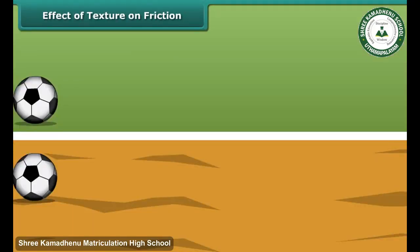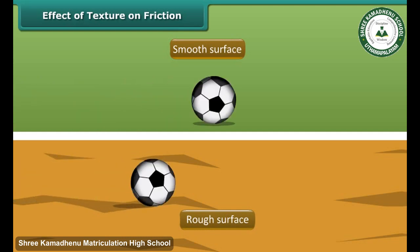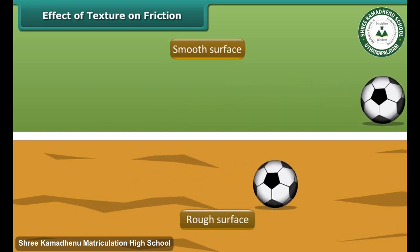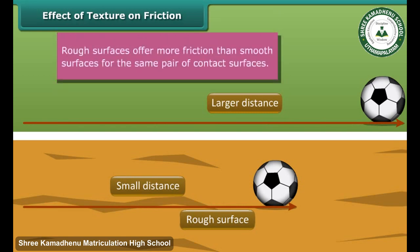In this figure, a ball is rolled on a smooth surface and another similar ball on a rough surface. Both balls start rolling on different surfaces with the same speed, same force, and at the same time. The ball rolling on the smooth surface travels a larger distance than the ball rolling on the rough surface.